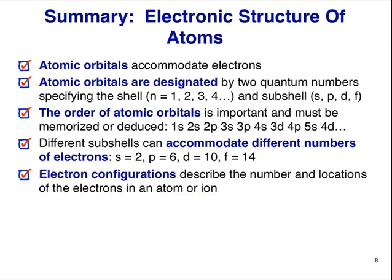Electron configurations describe the number and atomic orbitals associated with all the electrons in an atom or ion.